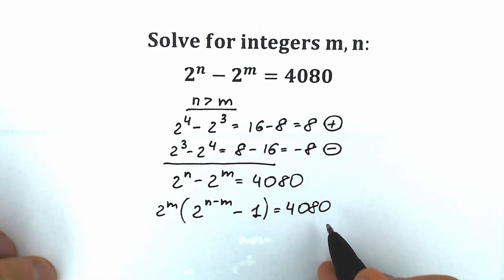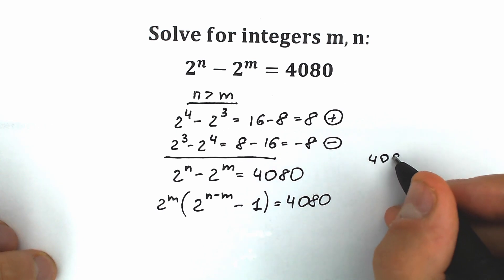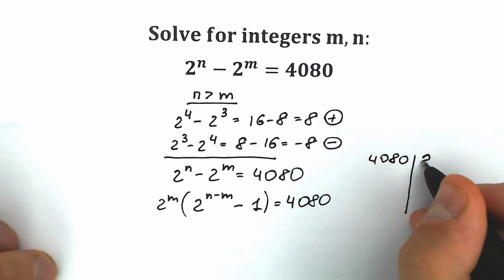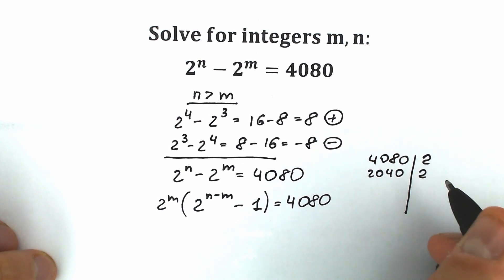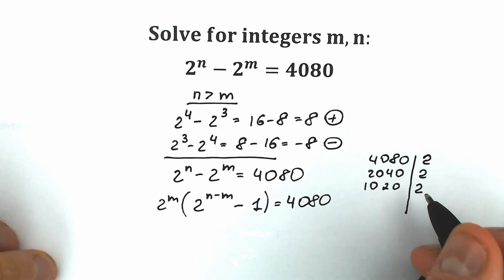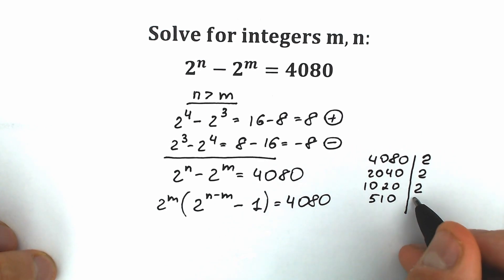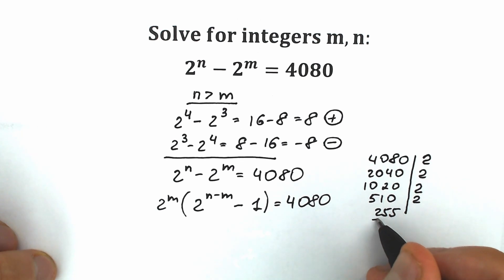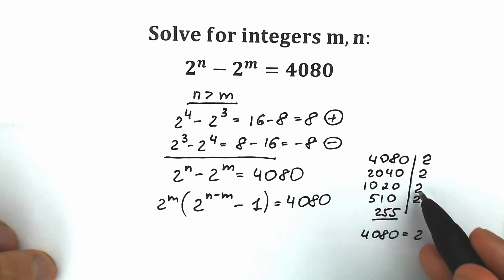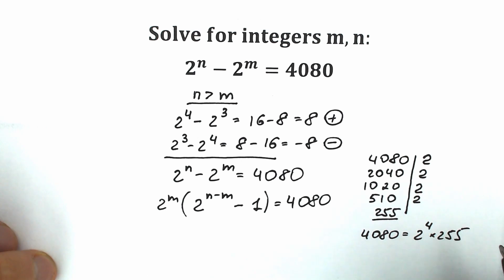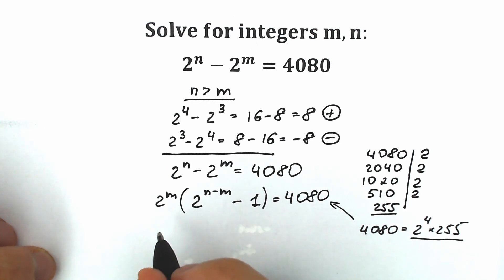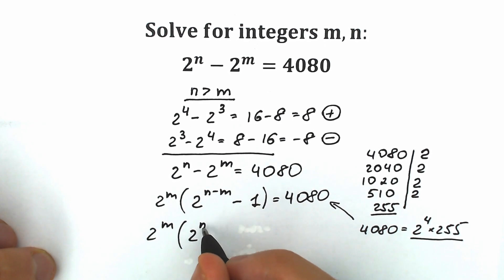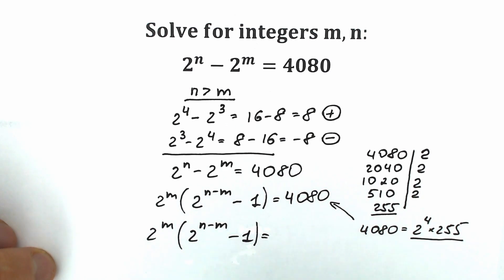Now let's express 4080 as a product. We divide by 2 to get 2040, divide by 2 to get 1020, divide by 2 to get 510, divide by 2 to get 255. We can't divide 255 by 2. So 4080 equals 2 to the power 4 times 255. Now let's plug in 2 to the fourth times 255 instead of 4080. So we have 2 to the power m times 2 to the power n minus m minus 1 equal to 2 to the power 4 times 255.